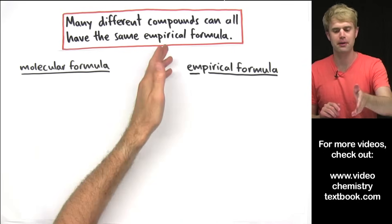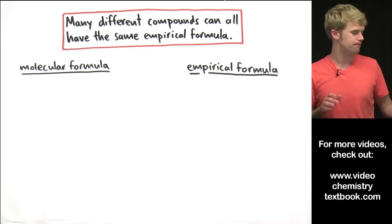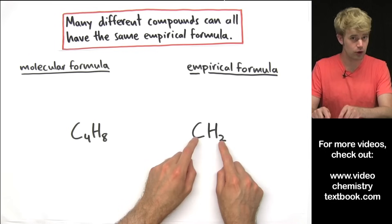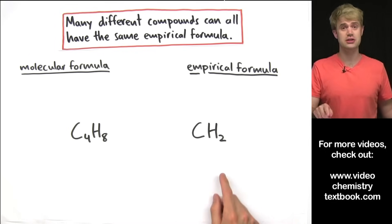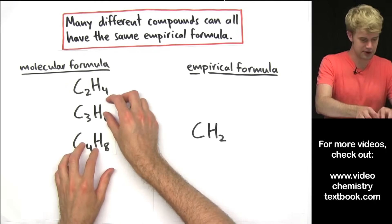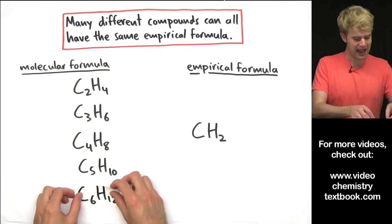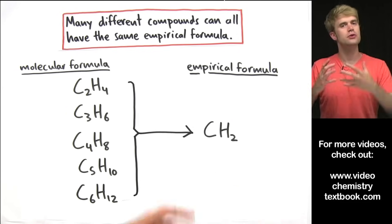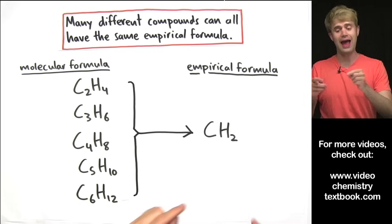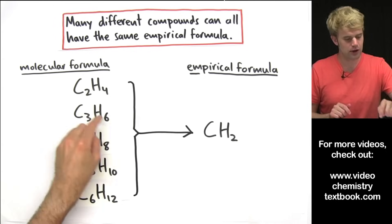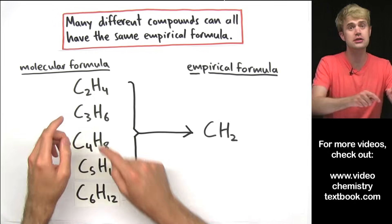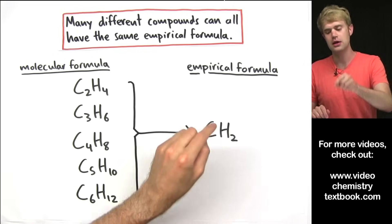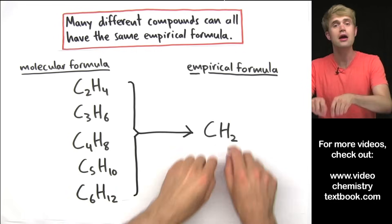Finally, I want to mention that many different compounds can all have the same empirical formula. Early in the video, we saw that the molecular formula C4H8 has CH2 as its empirical formula. But many other compounds also have CH2 as their empirical formula: C2H4, C3H6, C5H10, and C6H12 all have CH2 as their empirical formula. Whenever we have a molecular formula with just carbon and hydrogen where we have twice as many hydrogens as carbons, the empirical formula will always be CH2. So many molecular formulas can have the same empirical formula.